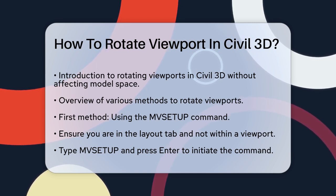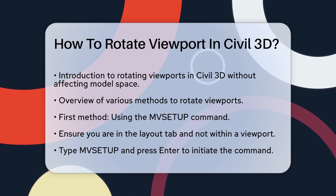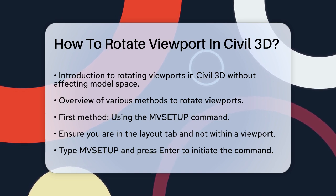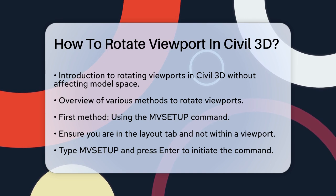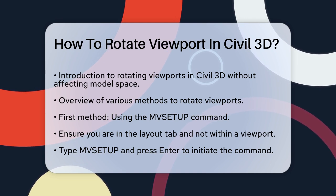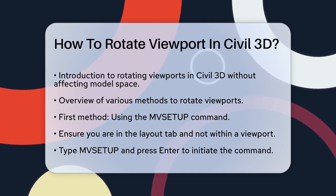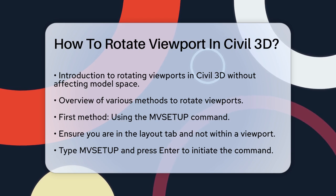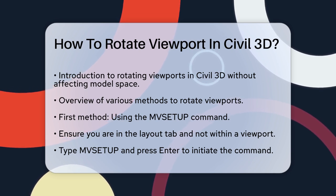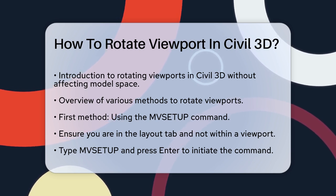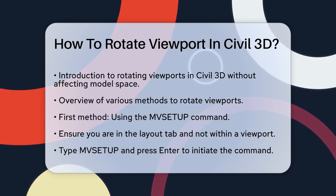First, you have a few different methods to achieve this, each with its own advantages. One of the most common methods is using the MV Setup command. To start, make sure you're in the Layout tab of your drawing and not inside any viewport. Type MV Setup and press Enter. This command allows you to set up your model view independently from your model space.